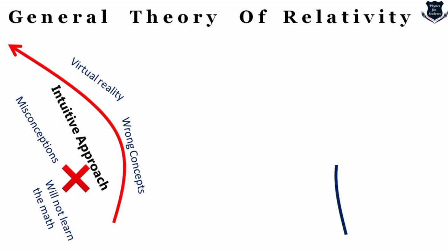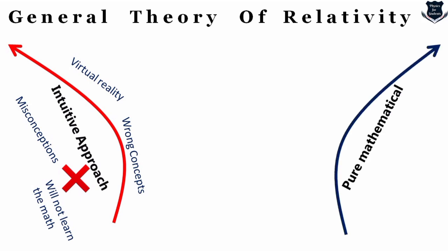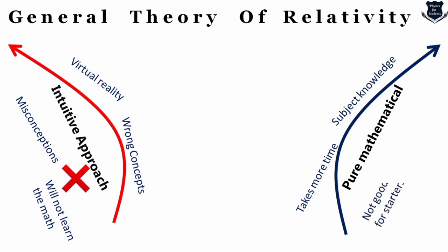The pure mathematical approach, shown in blue on the right, takes a huge amount of time because you really have to grab and understand all the mathematics dictating relativity. You need thorough knowledge of the subject, and it is not good for starters because it takes huge time and effort, and you might lose interest. However, yes, pure mathematical can be an approach — it gets a green tick.